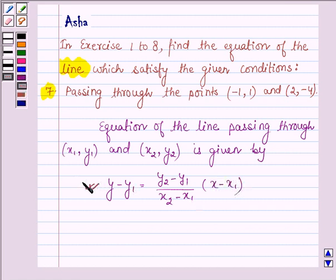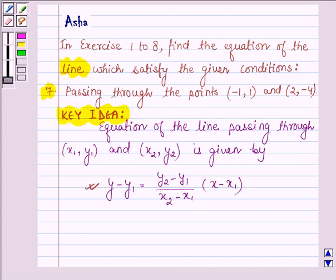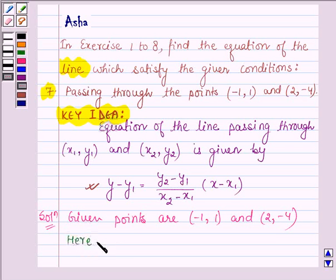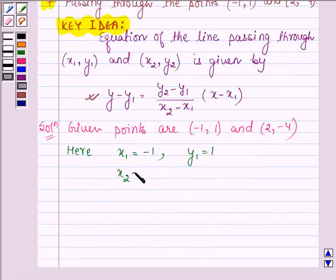With the help of this key idea, we are going to solve the problem. Let us now start with the solution. The given points are (-1, 1) and (2, -4). Here we have x₁ = -1, y₁ = 1, x₂ = 2, and y₂ = -4.